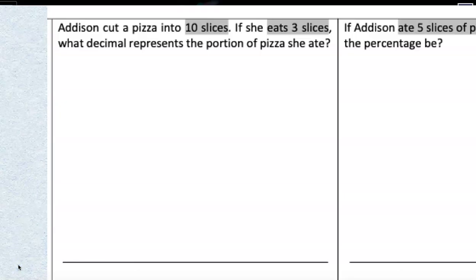Let's start with this first one. Addison cut a pizza into ten slices. If she eats three slices, what decimal represents the portion of the pizza that she ate? Well, let's think of this as a fraction. So our pizza is divided into how many pieces? Yes, ten pieces.